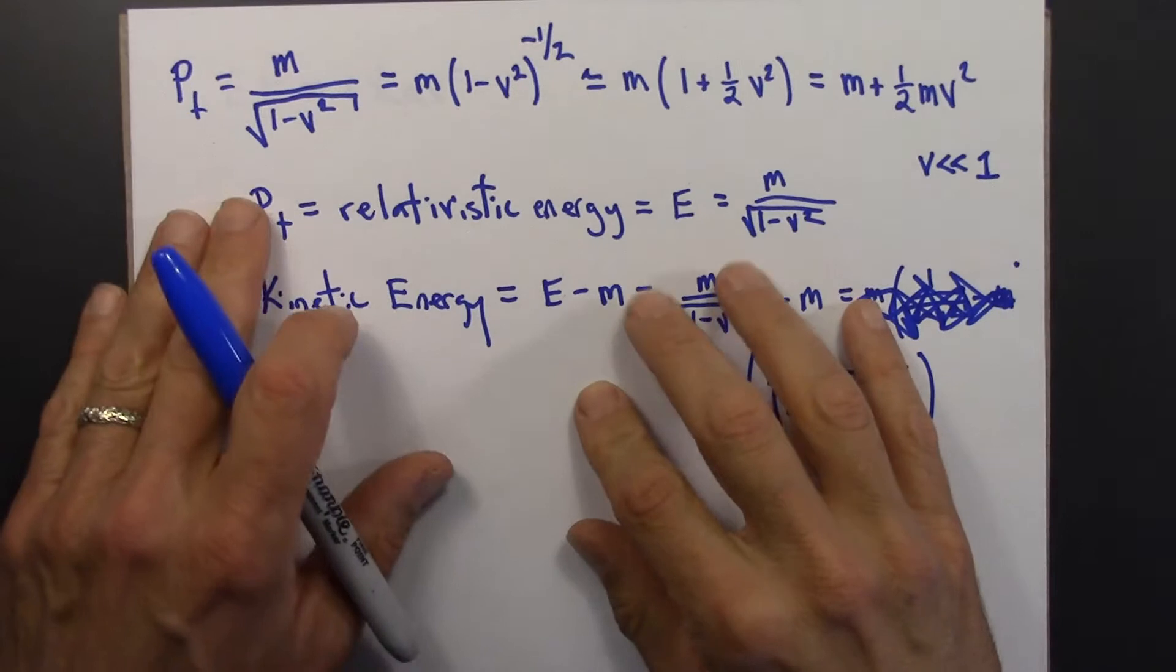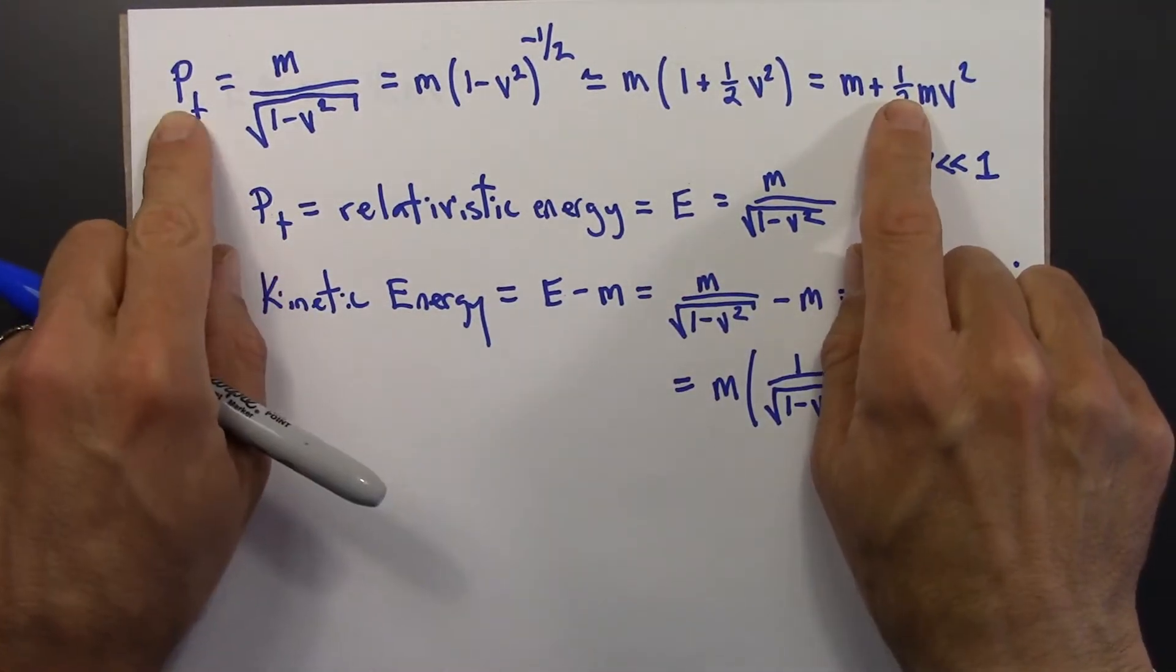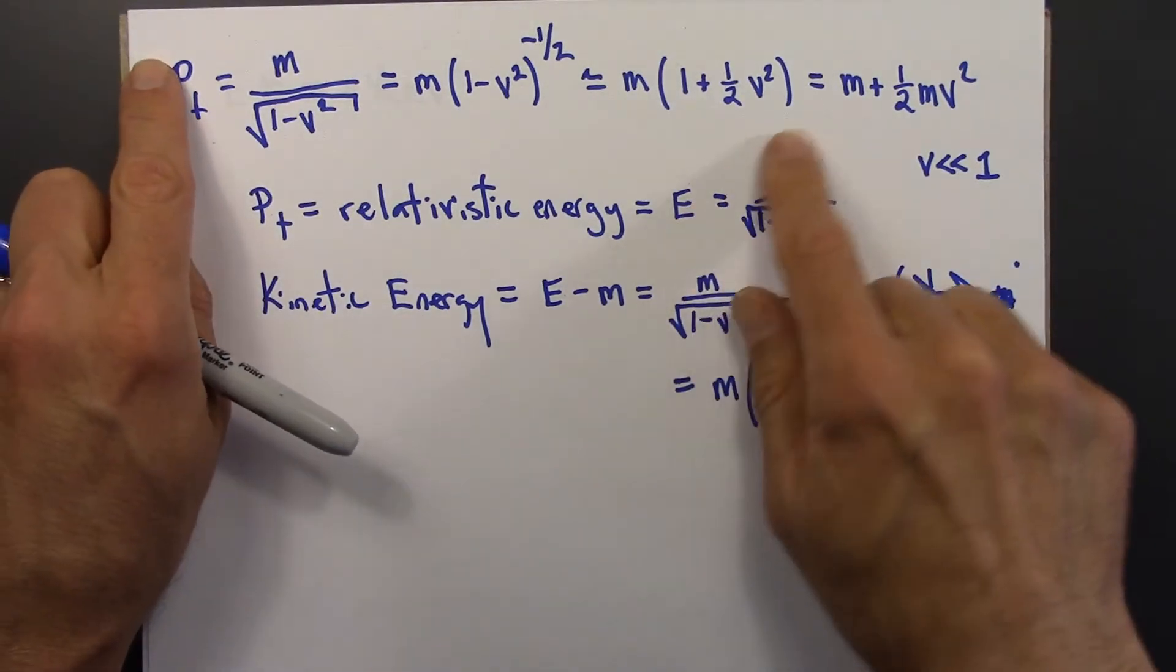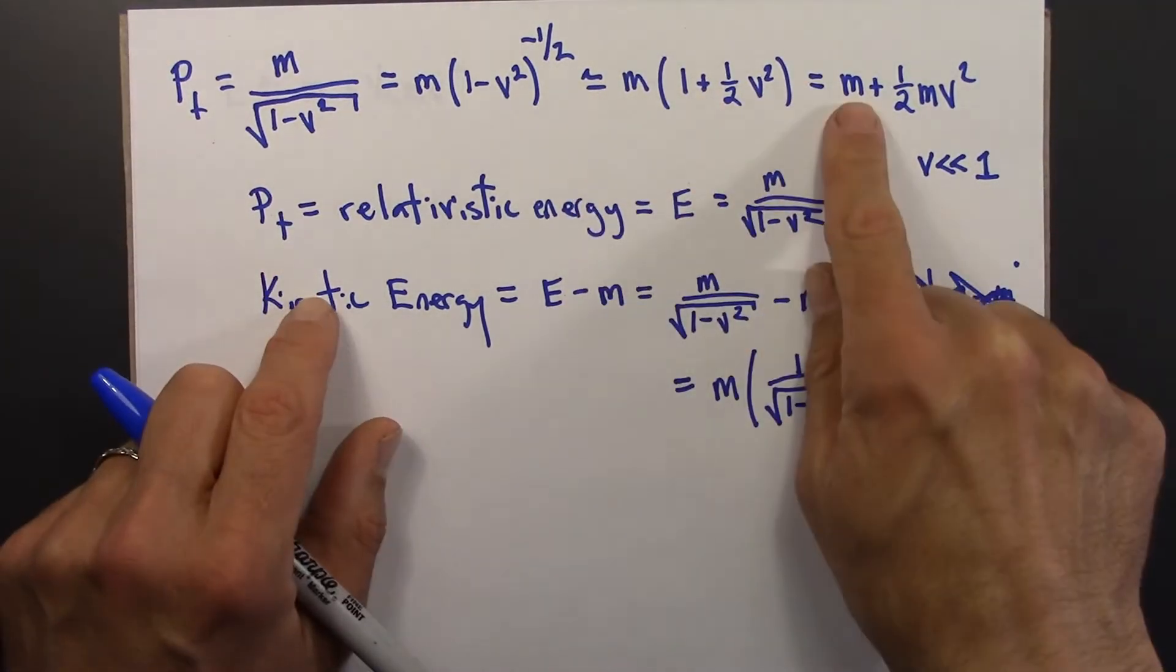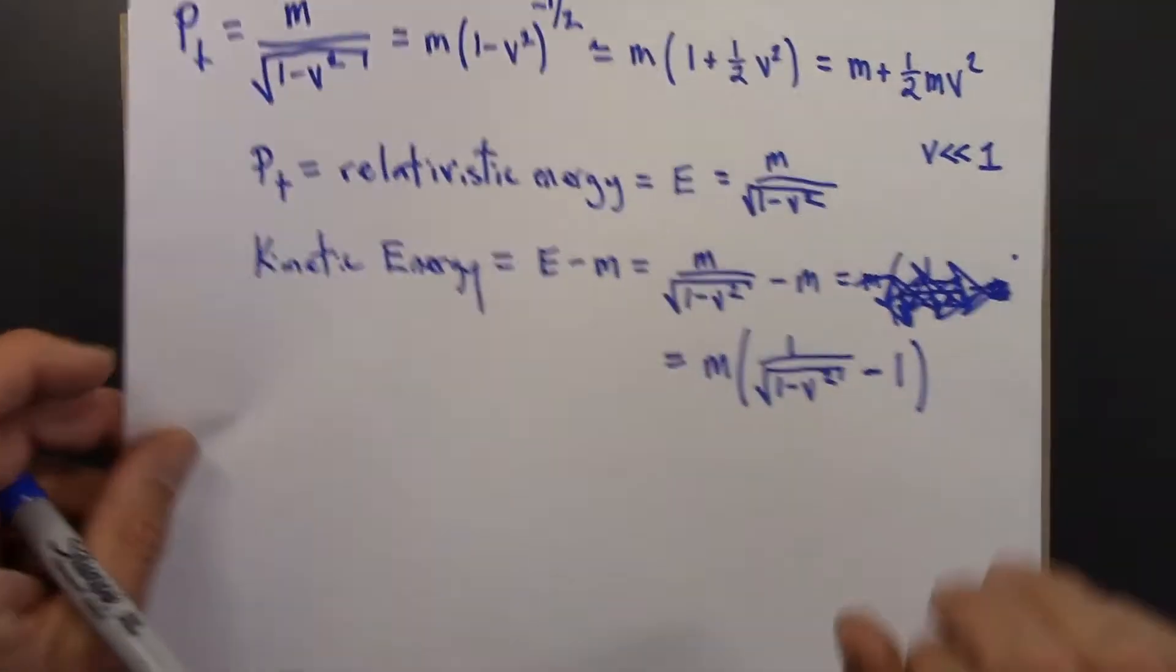So let's continue our exploration of relativistic energy by focusing on this equation. So E, which is the T component of four-momentum, is roughly equal to m plus half mv squared. So we're going to do a little bit of work on that.